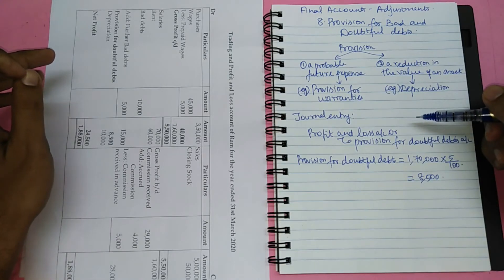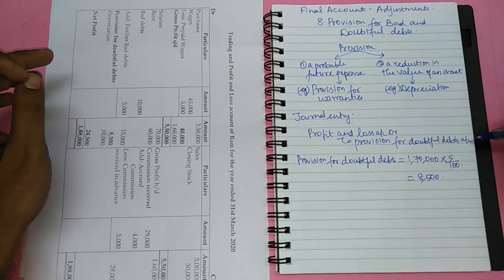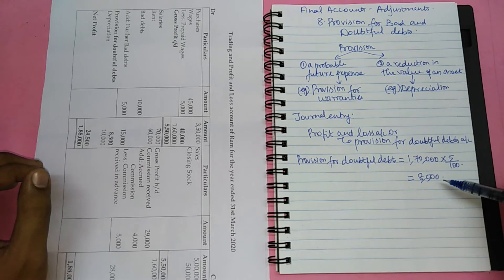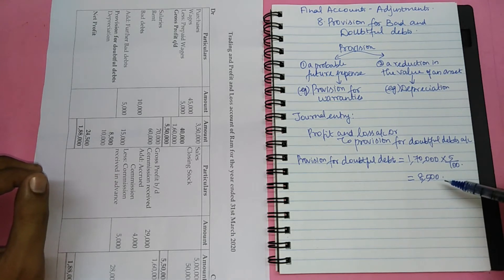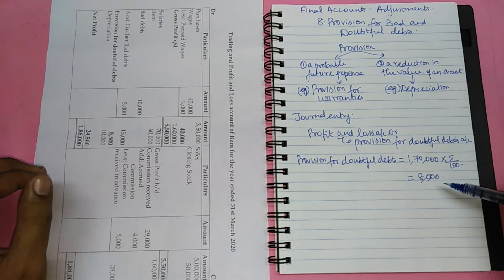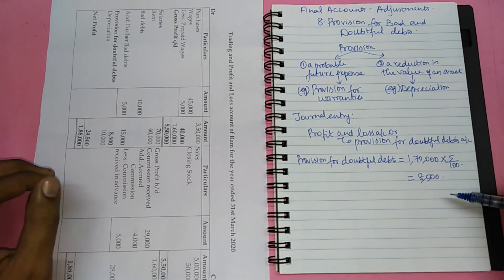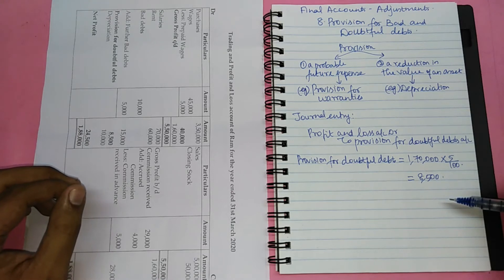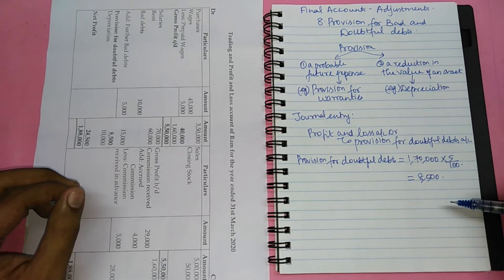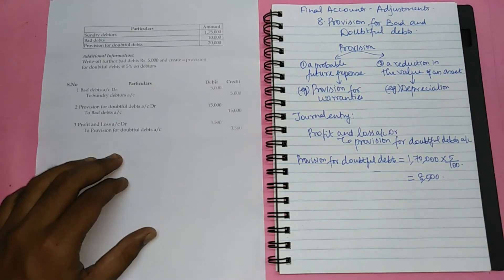The adjusting entry for provision for doubtful debts is profit and loss account debit to provision for doubtful debts account. This provision for doubtful debts of Rs.8,500 created this year will be carried forward to the next year, and the bad debts arising during the next year will be adjusted against this provision. The provision carried forward from the previous year is called the opening provision or old provision, and the provision required at the end of the current year is called the new provision. While calculating the new provision, the balance of the old provision from the trial balance should also be taken into account.